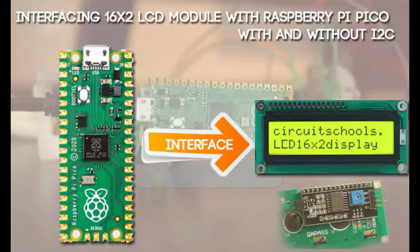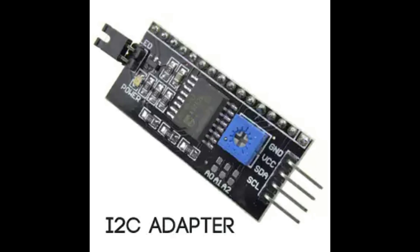Hello, and welcome to this quick tutorial on how to connect a 16x2 LCD display module with Raspberry Pi Pico board. The I2C adapter uses only two wires for data transfer and two wires to power up, which makes it a quick and easy process.